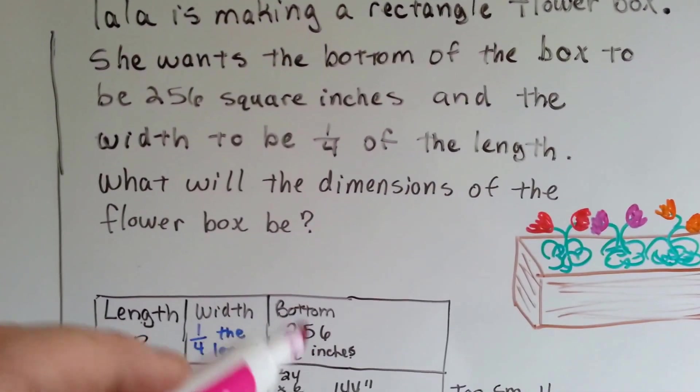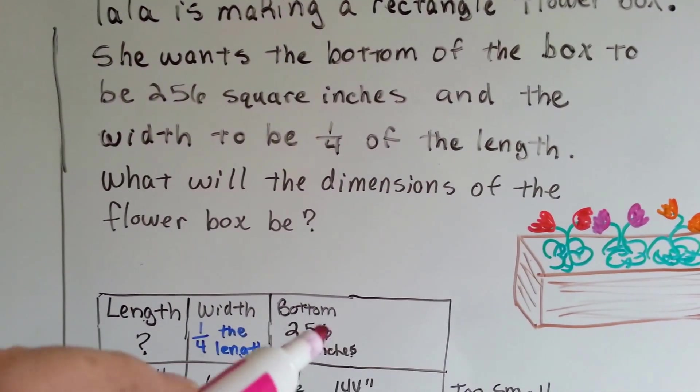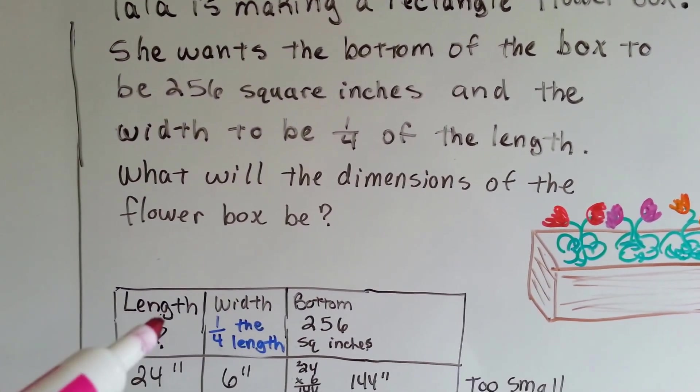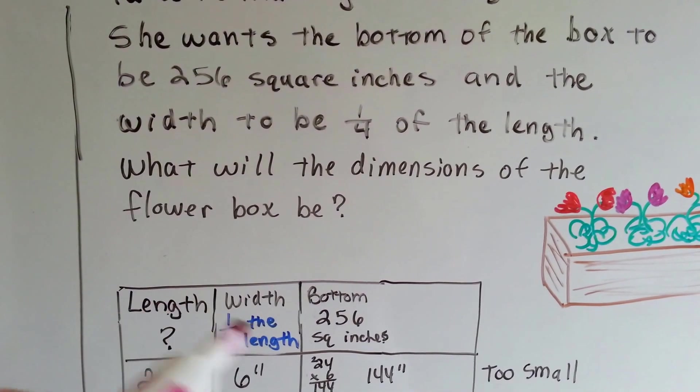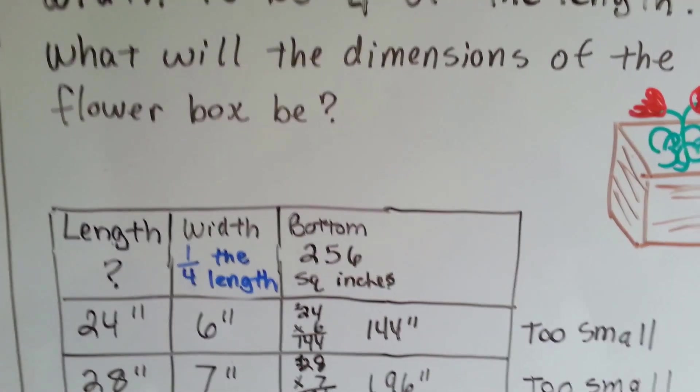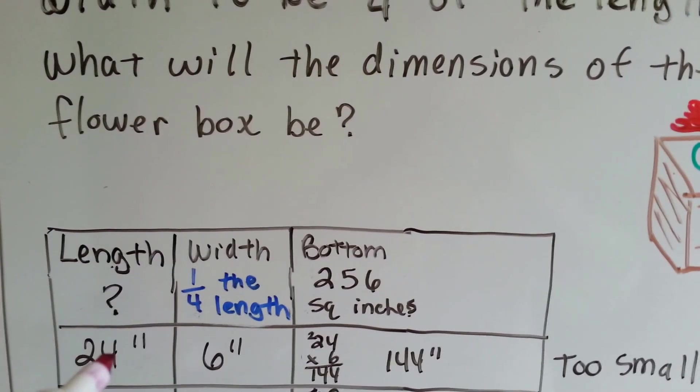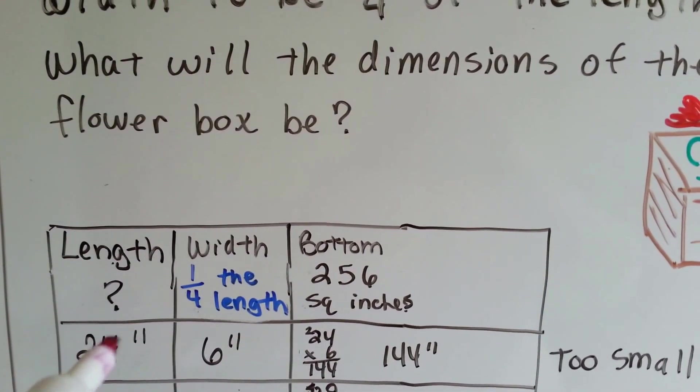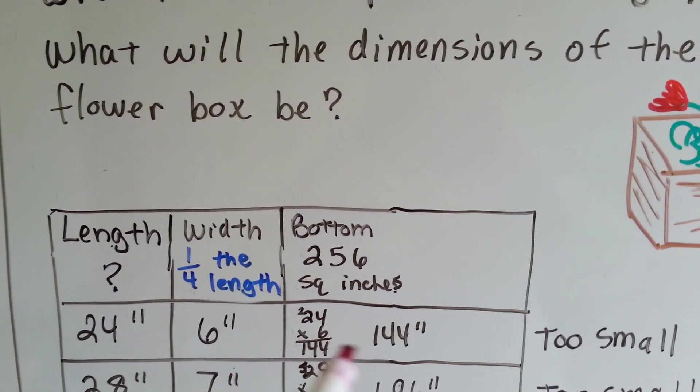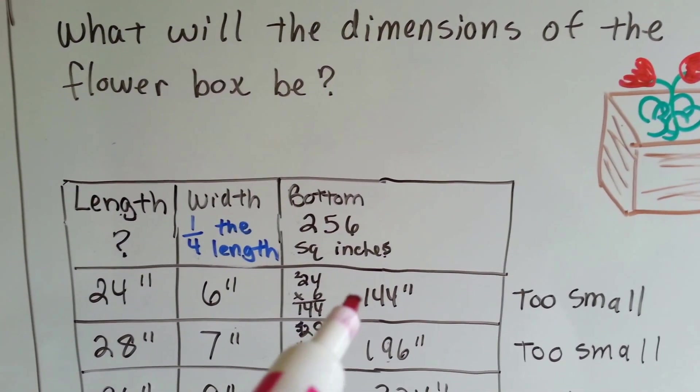Alright, we know the bottom has got to be 256 square inches, and we know the width has got to be one-fourth of that length. But we don't know what the width or length is, just that this is going to be one-fourth of this. So I tried twenty-four inches. One-fourth of twenty-four inches is six inches. I multiplied the twenty-four by six, and I got one forty-four. Well, that's too small.